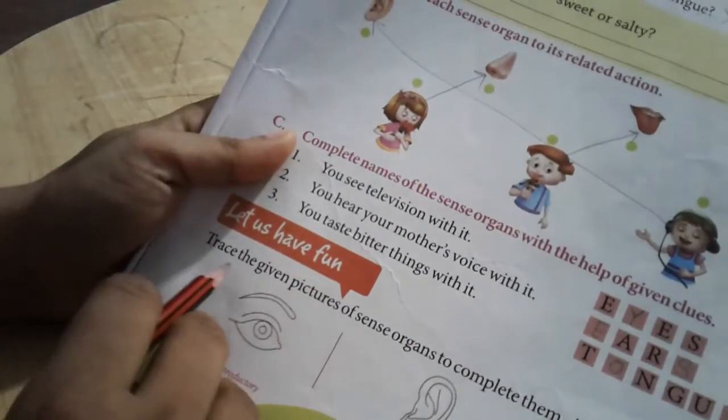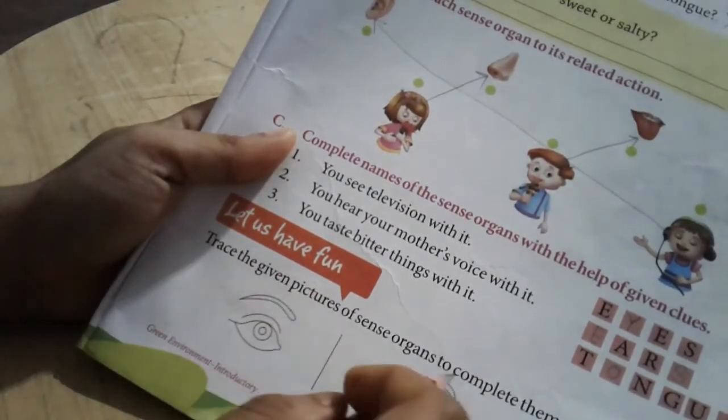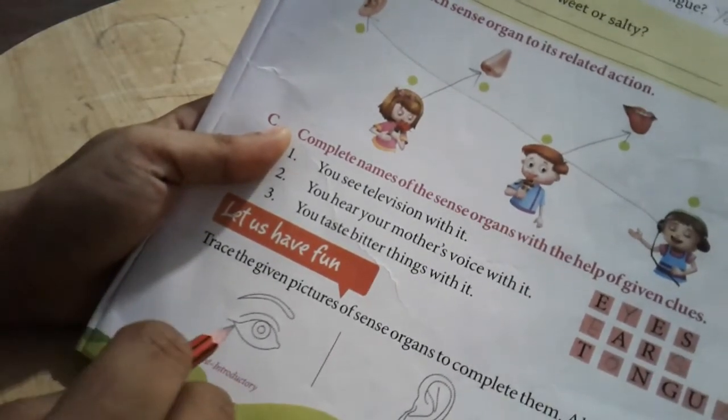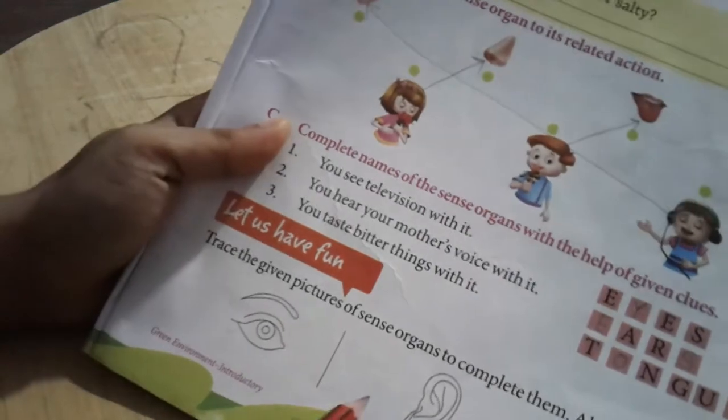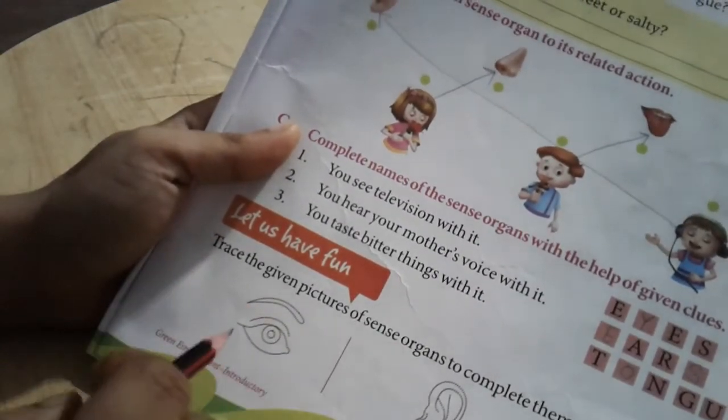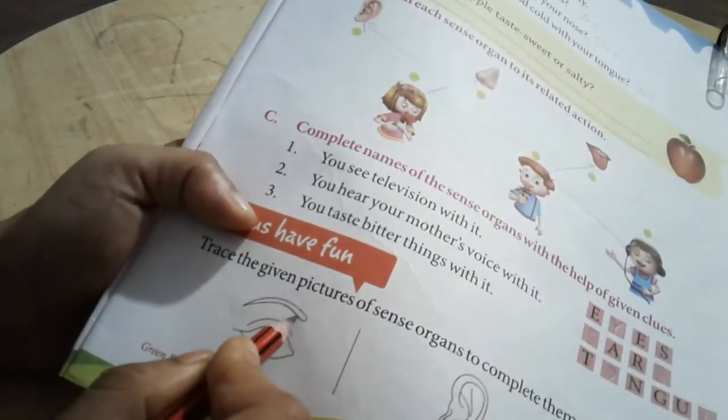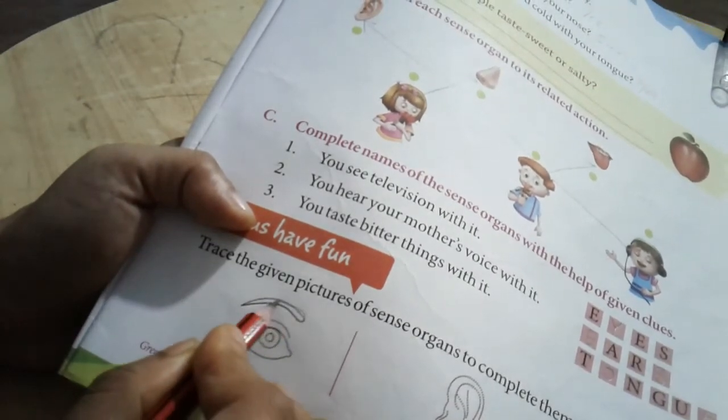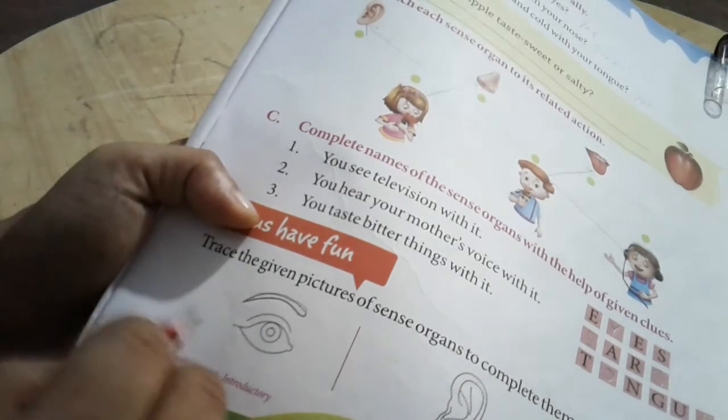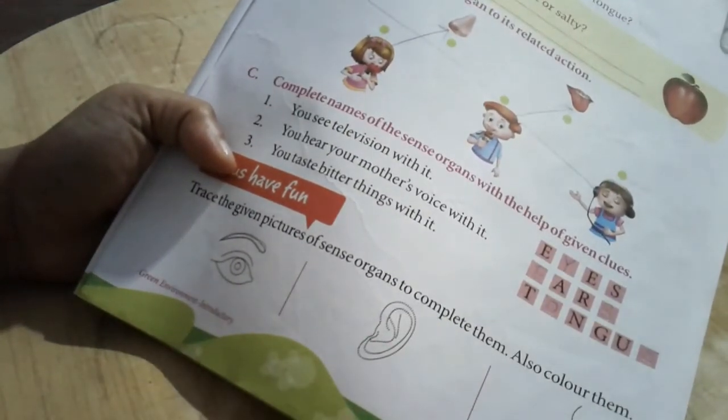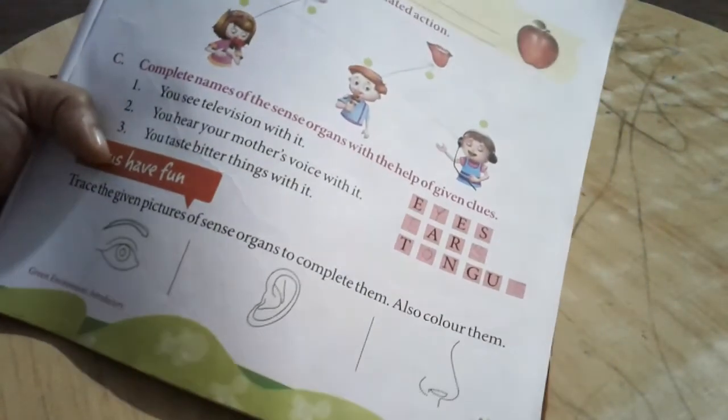So now, let's have some fun. Trace the given pictures of sense organs to complete them, and also color them. So what you can do instead of tracing them somewhere, you can just join the dotted lines. Join them with your pencil like this. And then you can color them here only in your book. Eyes, ears, and nose.